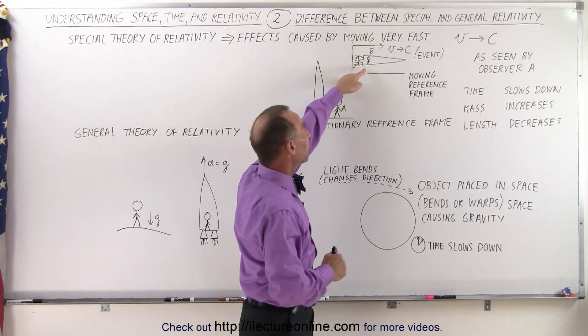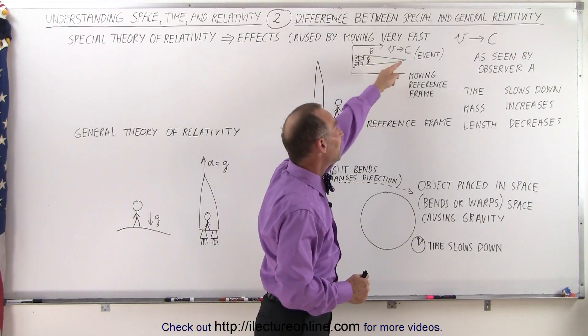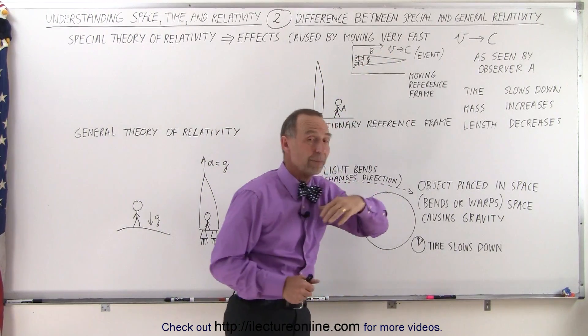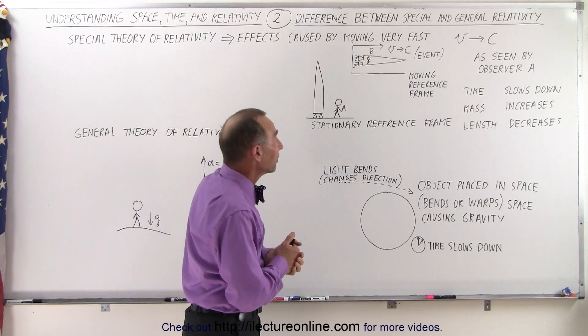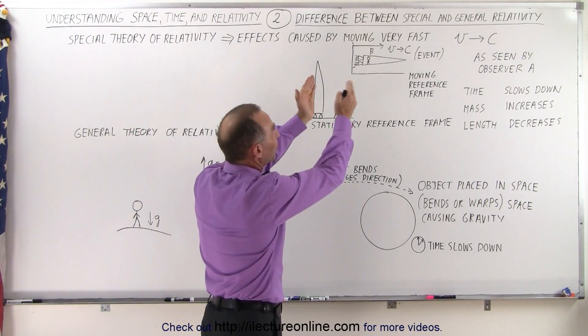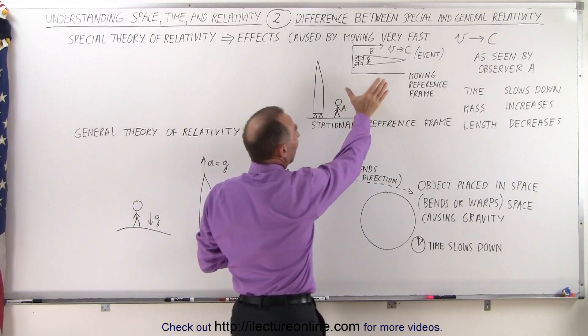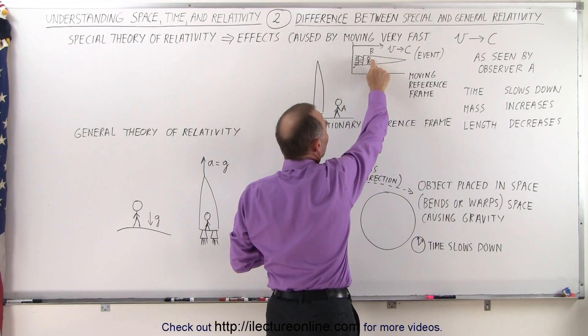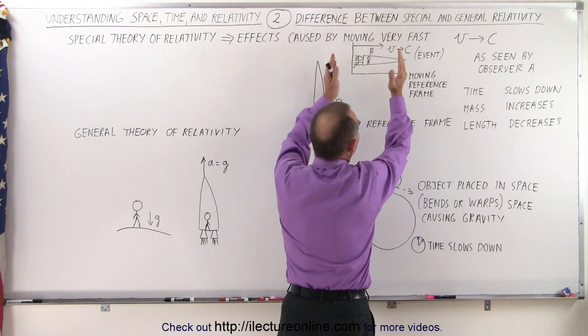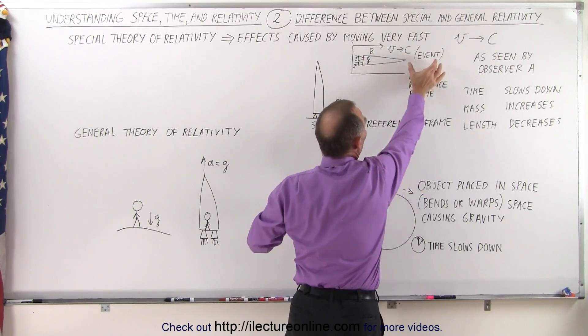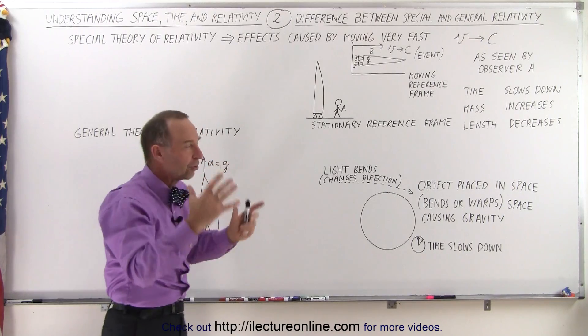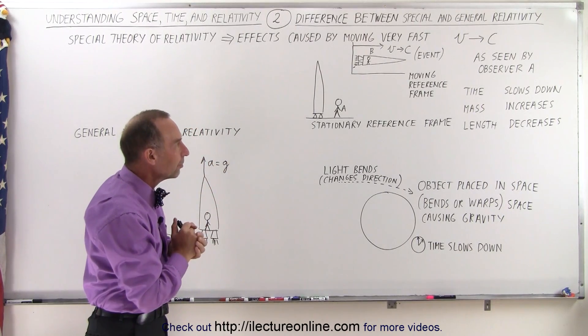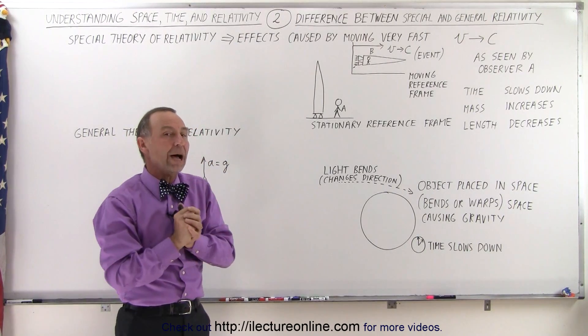Let's say we have a second observer that is on a spaceship that's moving really fast, where the velocity of the spaceship is pretty close to the speed of light. So let's say that that becomes the event, you can also think of this as the moving reference frame. The spaceship and the person in it, Observer B, is moving and that becomes the moving reference frame, also sometimes called the event, and depends upon how the situation is set up. We'll see some examples.